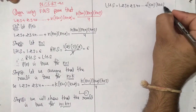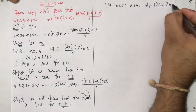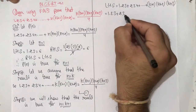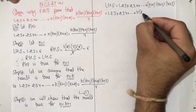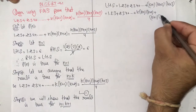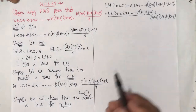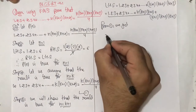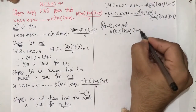Putting n = k+1, the last term becomes (k+1)(k+2)(k+3). So LHS = 1·2·3 + 2·3·4 + ... + k(k+1)(k+2) + (k+1)(k+2)(k+3). From equation (1), the sum up to k terms equals k(k+1)(k+2)(k+3) / 4, so we substitute that in.